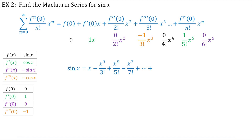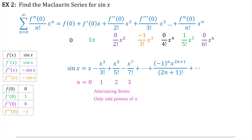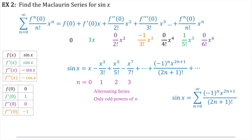We're also going to notice that this is an alternating series. Sine of x equals x minus x cubed over three factorial plus x to the fifth over five factorial minus x to the seventh over seven factorial. If we start counting with n equals zero, and take into account that this is an alternating series with only odd powers of n, our nth term looks like this: negative one to the n, x to the two n plus one, over two n plus one factorial. Notice that the exponent and the factorial always match. So here is the Maclaurin series for sine of x.